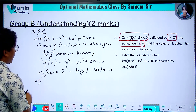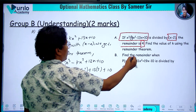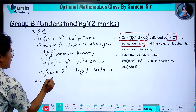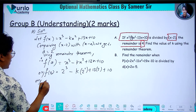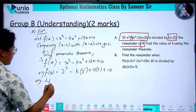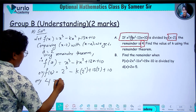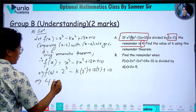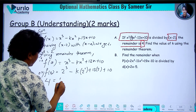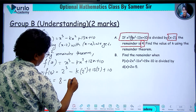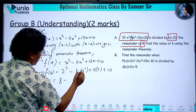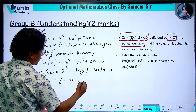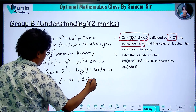We remember that the remainder is 4. So we will solve: 2 into 2 into 2 is 8, 2 squared is 4. Now, what is 4k? 13 into 2 is 26, plus 10.